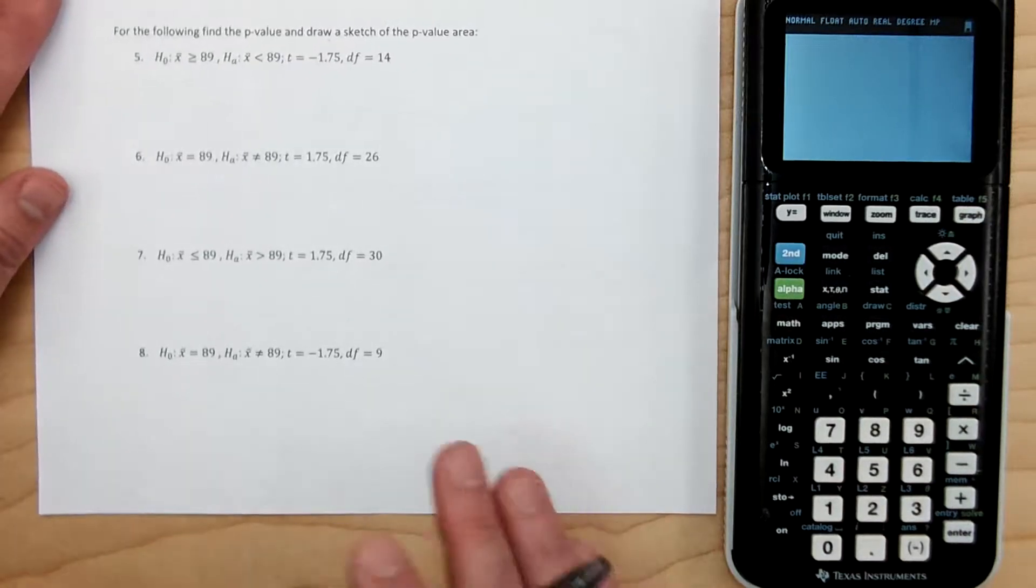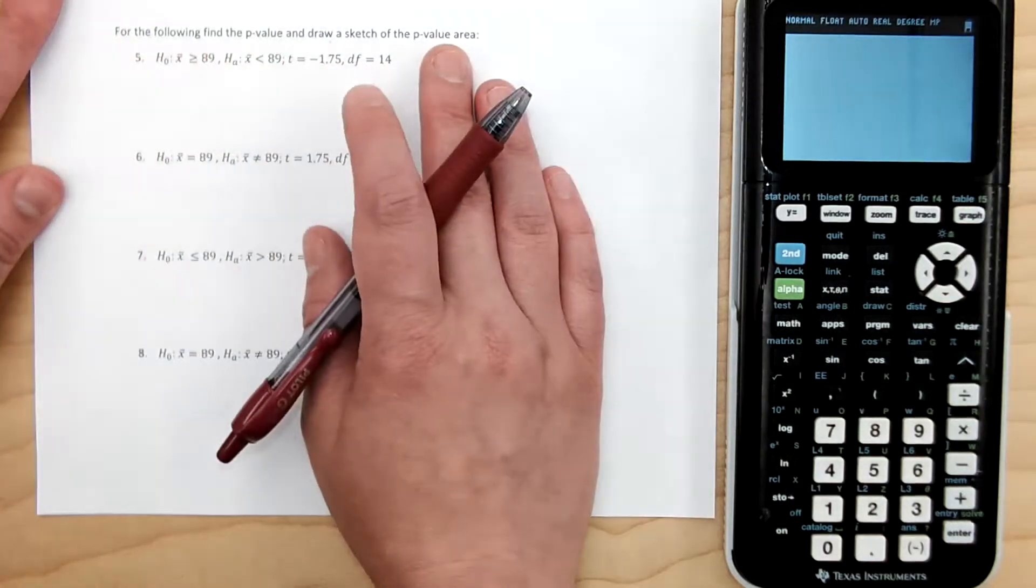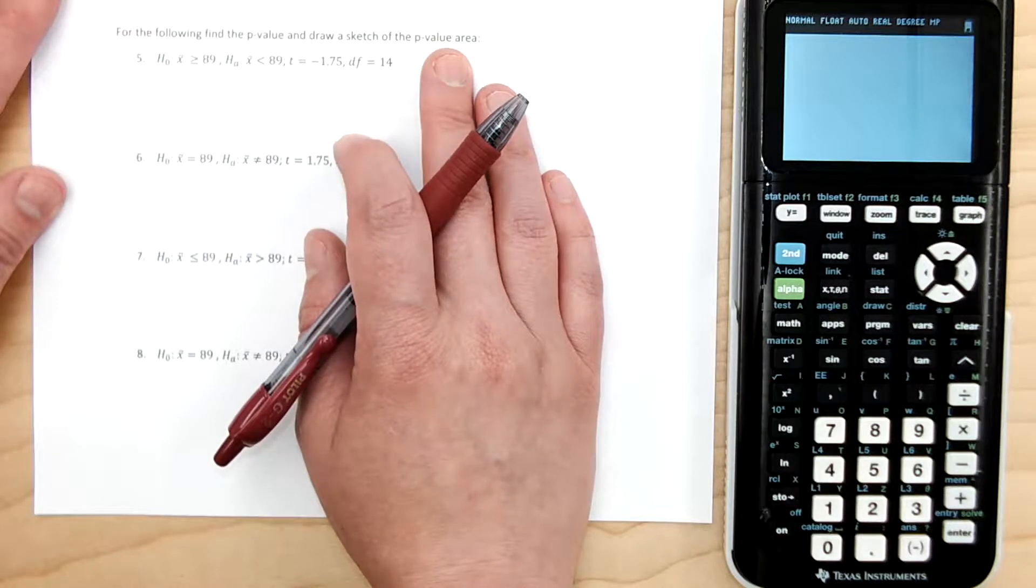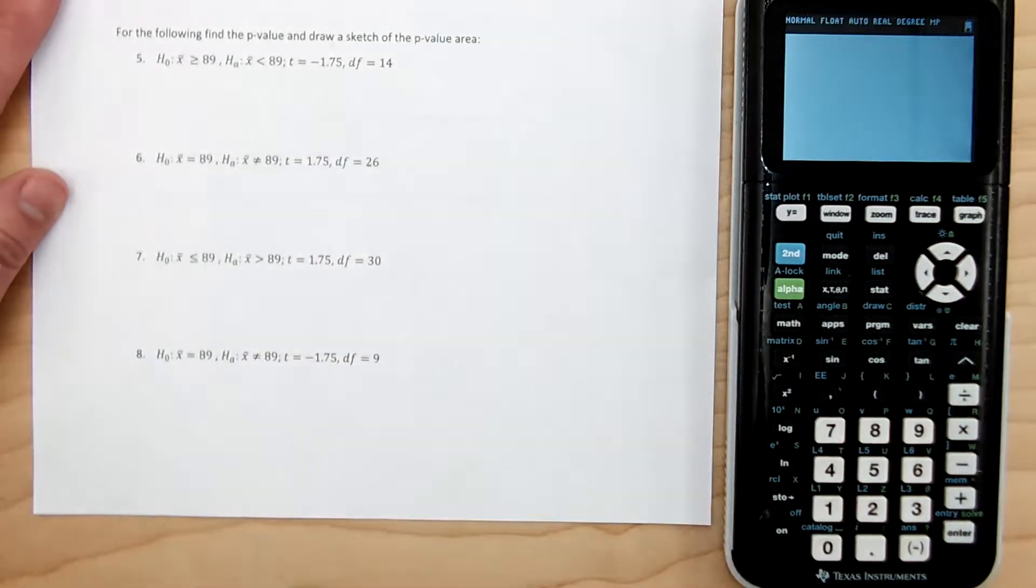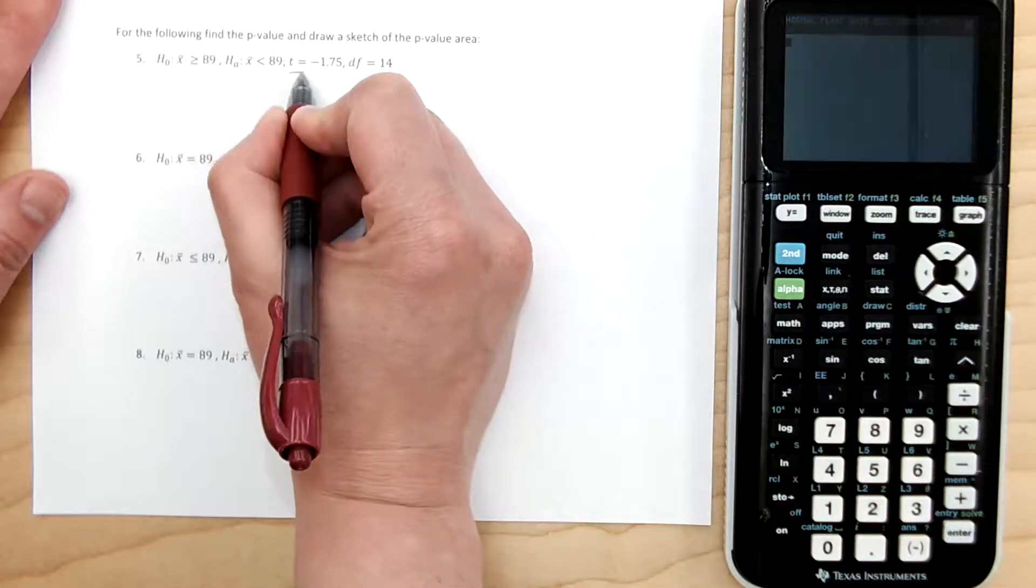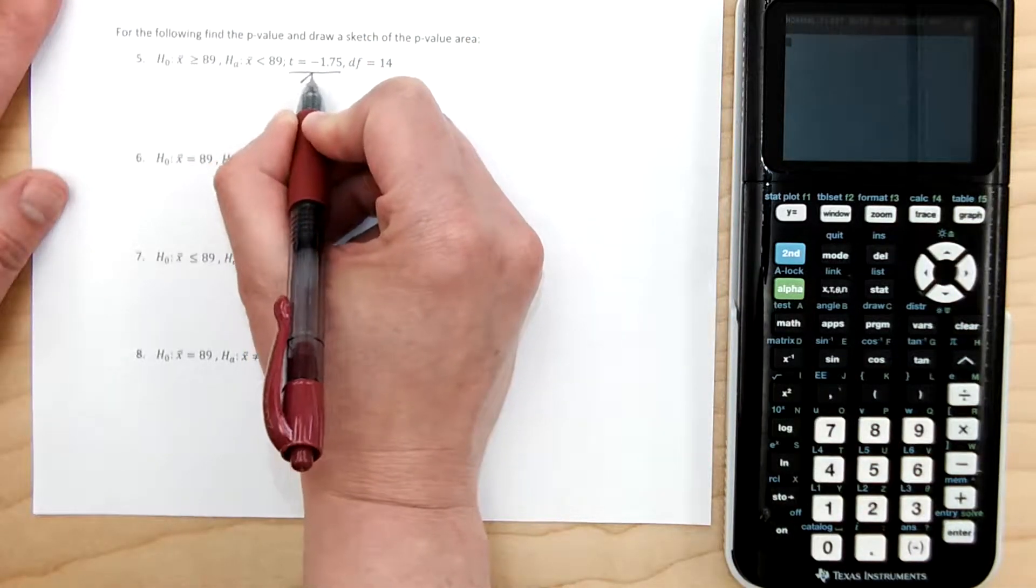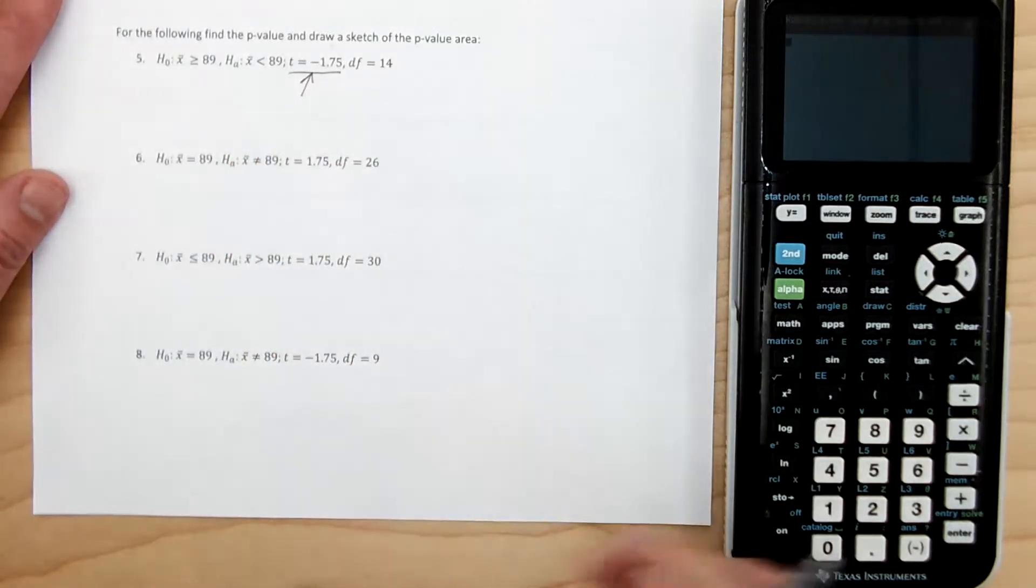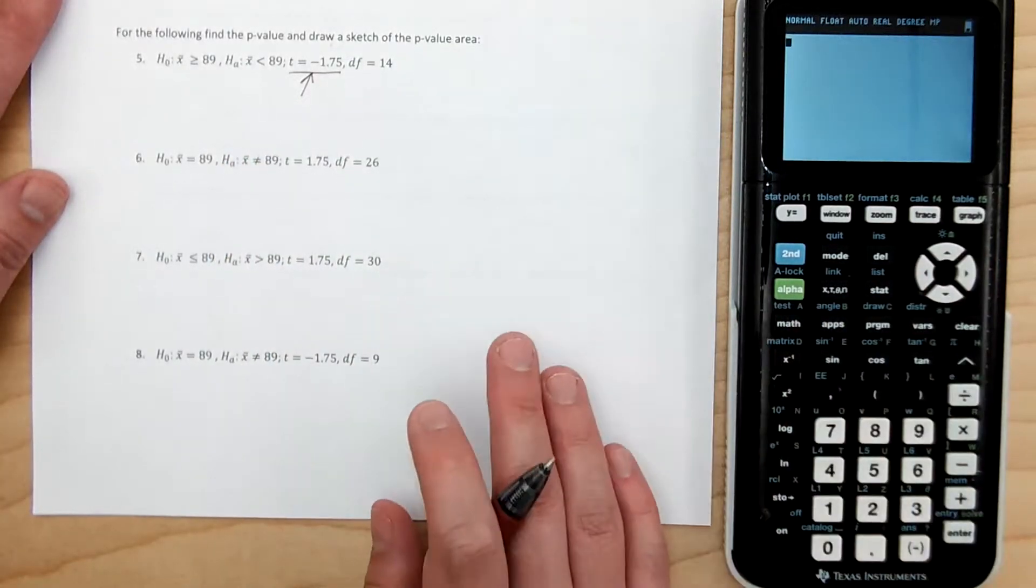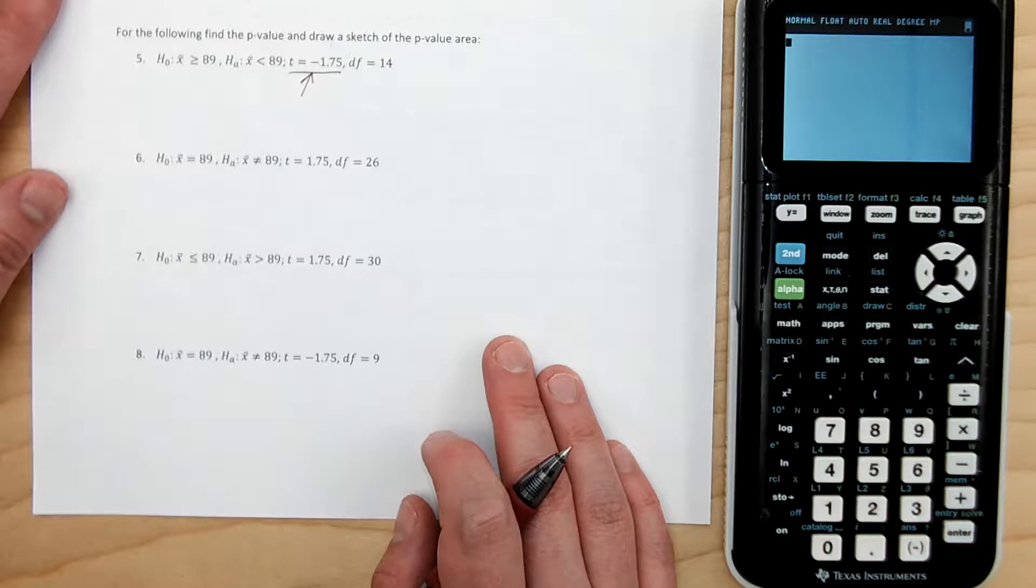So here we have the example. We want to find the p-value and draw a sketch of the p-value area. So we're talking about hypothesis testing. We're doing T-testing instead of Z-testing, but finding the value for a Z-score is similar.